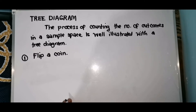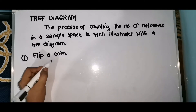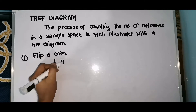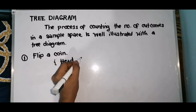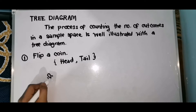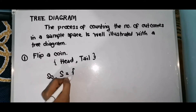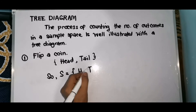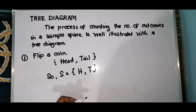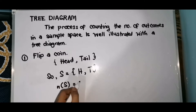We'll start with flipping a coin. When you flip a coin, there are 2 possible outcomes. We have head and tail. So our sample space is {head, tail}, and the number of elements in S is 2.